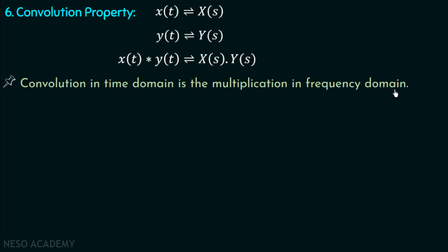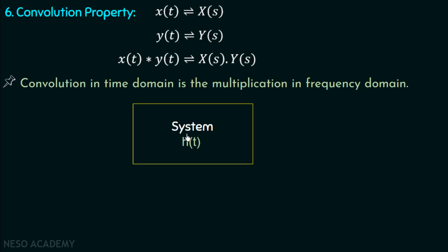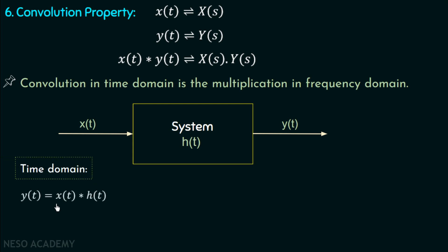We can understand the significance of the convolution property through the following example. Suppose we have an LTI system with impulse response h. If we give input x to this system, the output y can be calculated in the time domain as y equals the convolution of x with h. This means we need to convolve x and h, and that convolution is given by the integral from minus infinity to infinity of h(τ) multiplied with x(t−τ) dτ, where tau is a dummy variable.